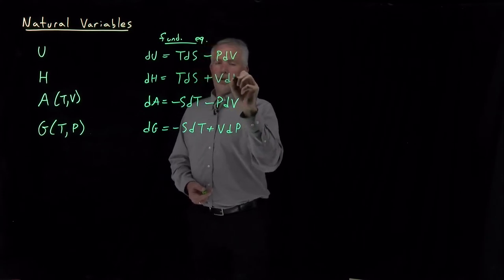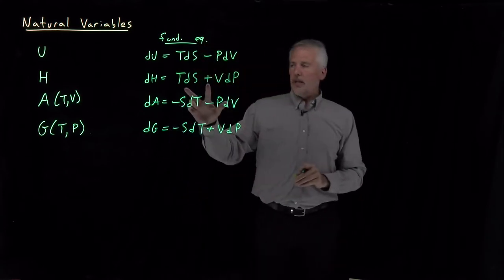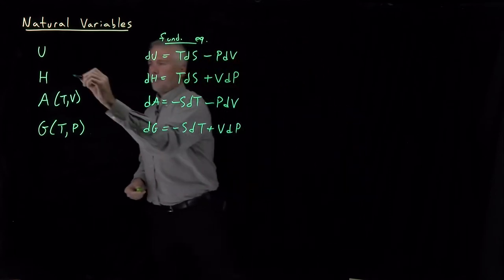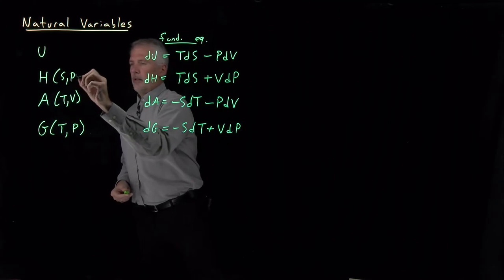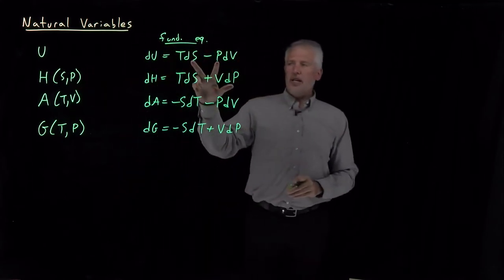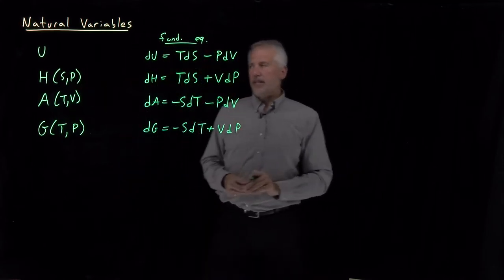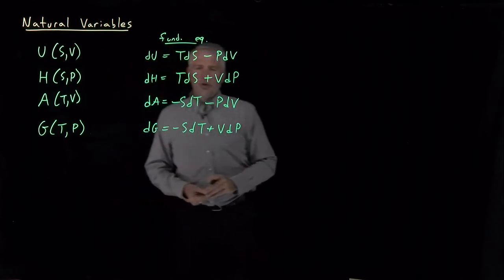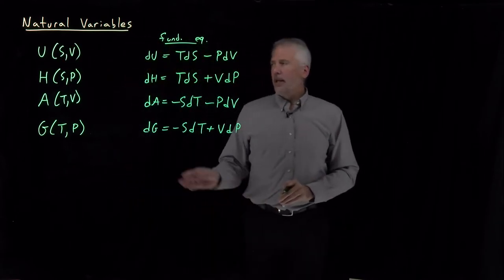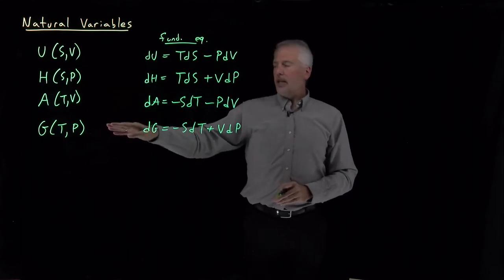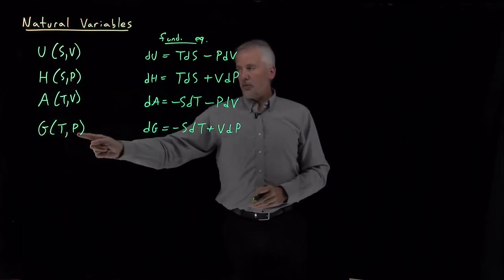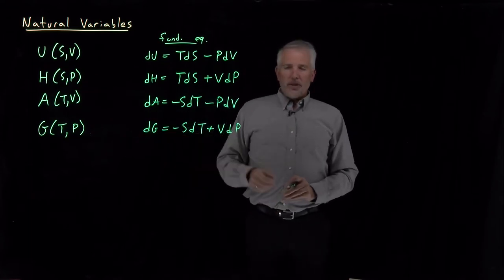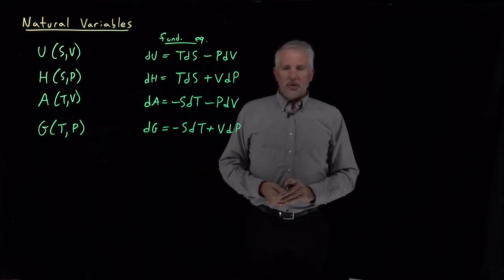We can see from the fundamental equation that the enthalpy has natural variables of S and P, while the internal energy has natural variables S and V. So that's one thing we mean by saying the natural variables of each of these energies are temperature and pressure, or entropy and pressure, or whatever — the fundamental equation is simple when expressed in those variables in particular.